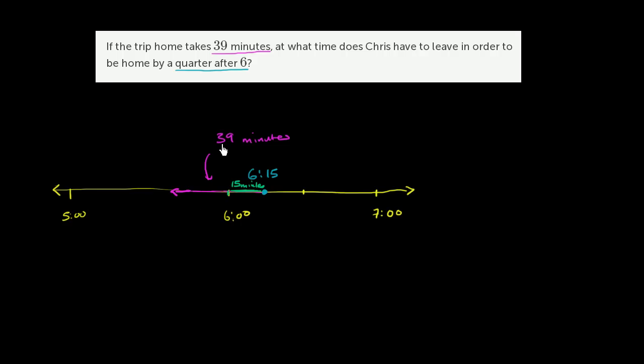Well, we went 15 of the 39. 39 minus 15 is 24. So we have to go another 24 minutes before the hour.